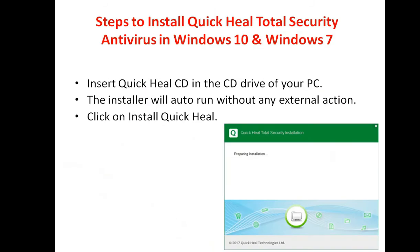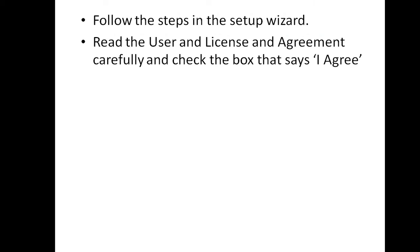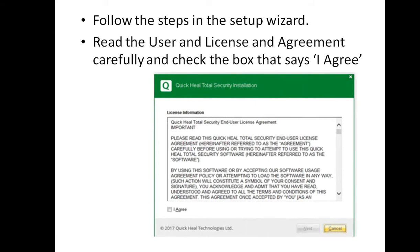There are two antivirus names mentioned here. I am taking Quick Heal as an example and will tell you how to install Quick Heal antivirus. Once you have purchased the product, the next step is to install and register it. There are two ways to install Quick Heal for Windows 7 and 10 — offline using a CD, or online using a product key. For offline, insert the Quick Heal CD into your PC's CD drive. The installer will auto-run, then click on Install Quick Heal. A wizard will appear — read the license agreement carefully and check the box that says I Agree.